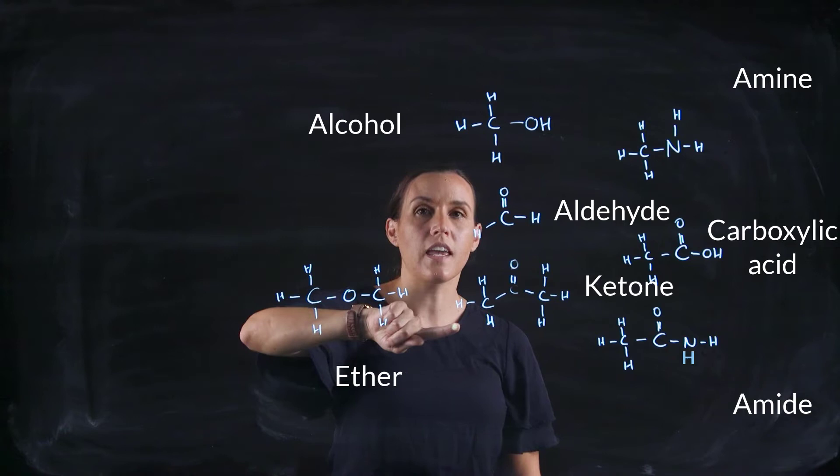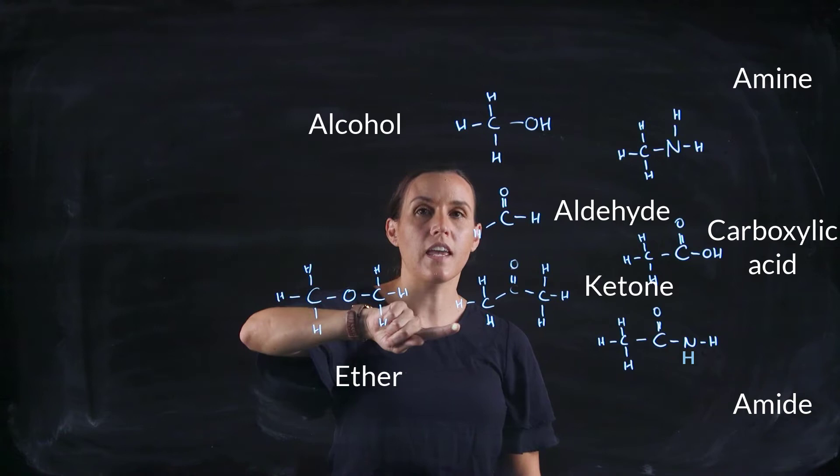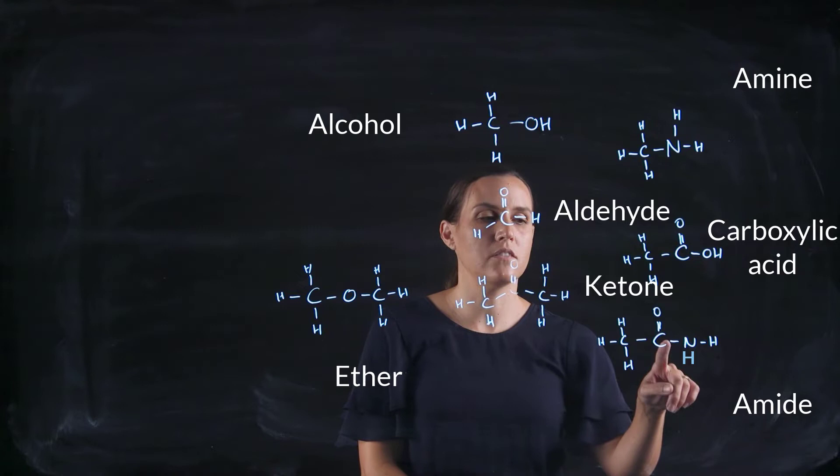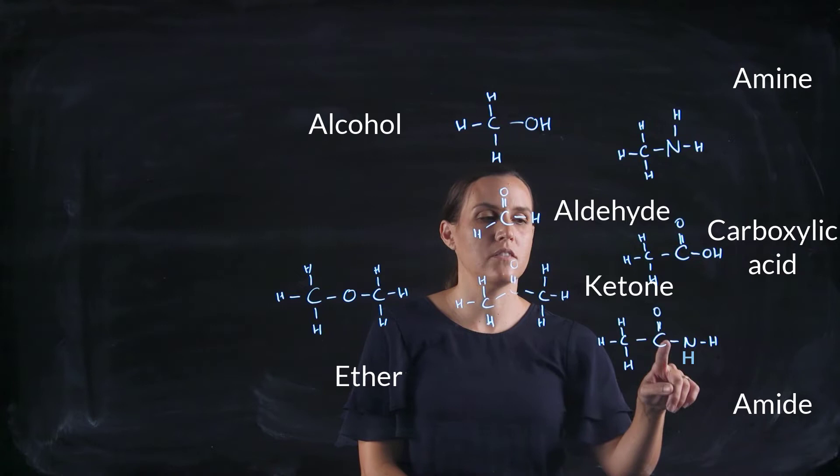So we've got an alcohol, an aldehyde, ketone—so it's a carbonyl in between two carbons; some have the hydrogen at the end. We've got an ether, we've got an amine, we've got an amide with the carbonyl and the nitrogen, and we've got a carboxylic acid.